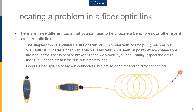Probably the simplest tool we can use is a visual fault locator, often referred to as a VFL. A visual fault locator, such as Fluke Networks' VisiFault, illuminates a fiber with a visible laser source. If the fiber is good, you'll see the red glow at the connector. But if there's a problem, the light will leak at the points where connections are bad.